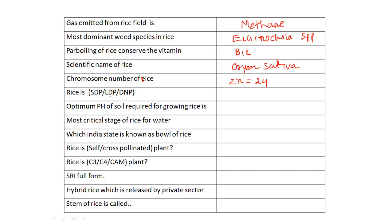Rice is a short-day plant. The optimum pH of soil required for growing rice is 4 to 6. The most critical stage of rice for water is booting. The Indian state known as the 'bowl of rice' is Chhattisgarh.